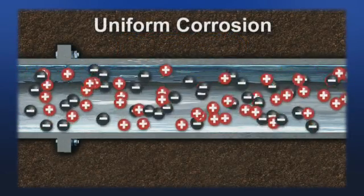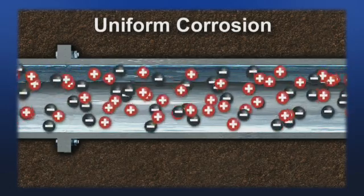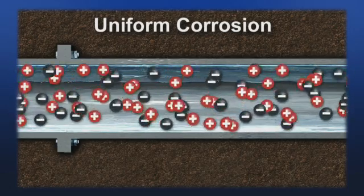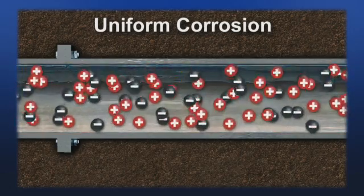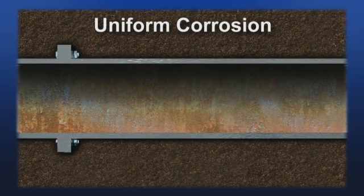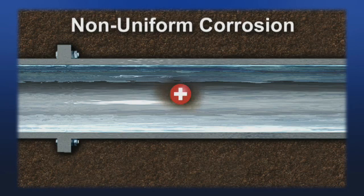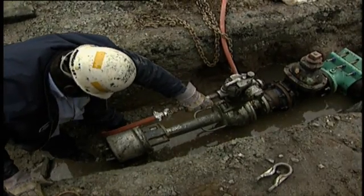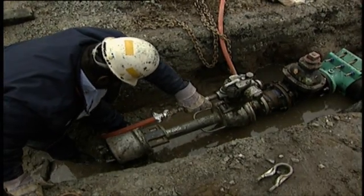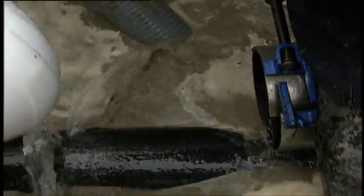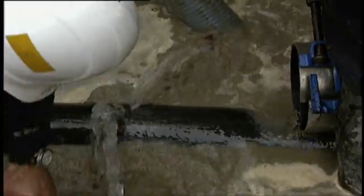In uniform corrosion, the anodic and cathodic sites move around dynamically on the pipe wall, resulting in uniform loss of metal. In non-uniform corrosion, the anode remains in one place and metal is lost from a localized point. Microbiologically influenced corrosion is one type of non-uniform corrosion, and preventing excessive growth of microorganisms can lower the possibility of corrosion.